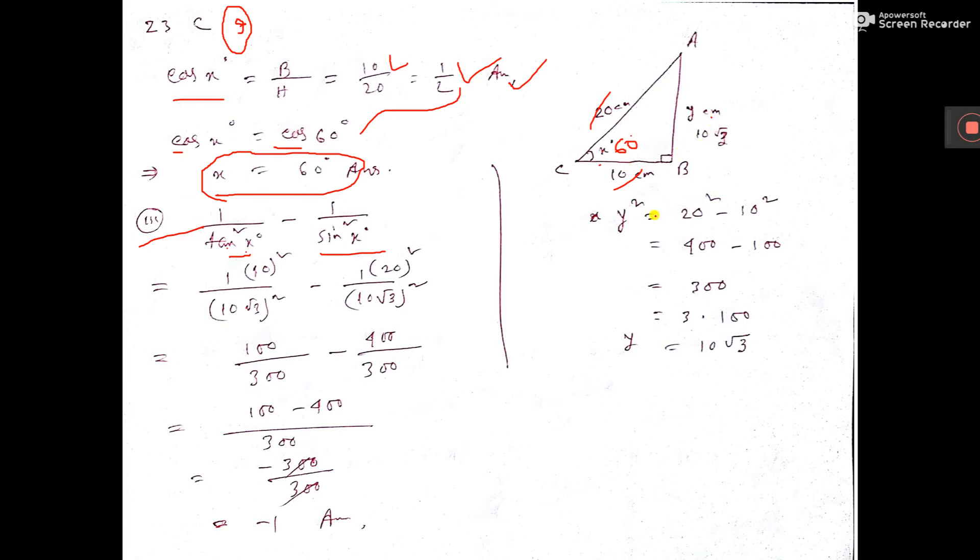So perpendicular here, by Pythagoras theorem - you see this, if you consider y, then y square equals 20 square minus 10 square. 300. 300 means 3 into 100. So y square equals this, that means y equals - from 100 it is 10 coming, and root 3 is there. 3 is becoming root 3. So 10 root 3 here.